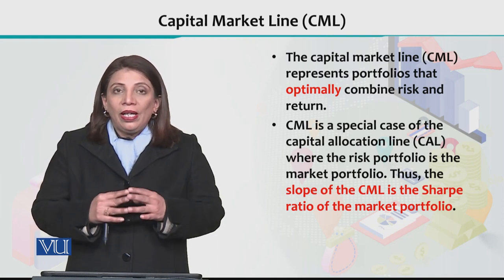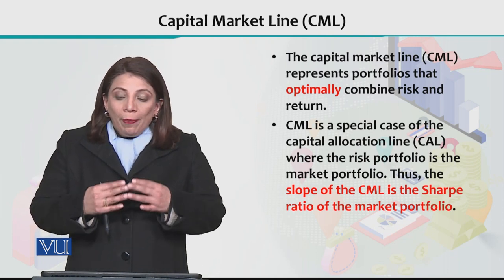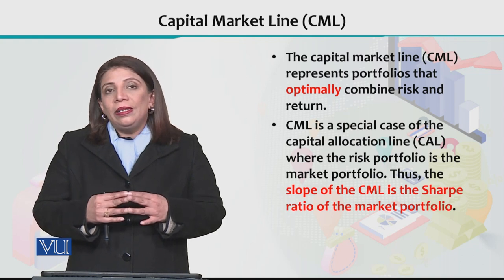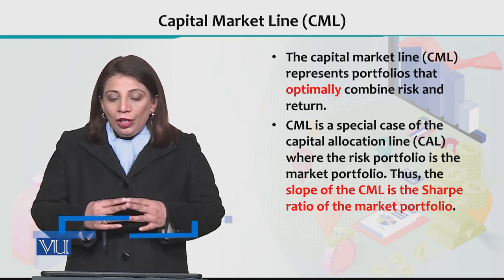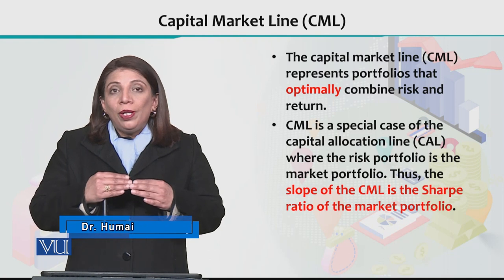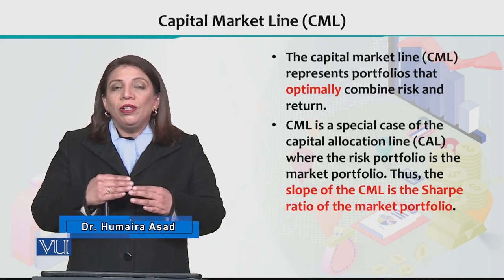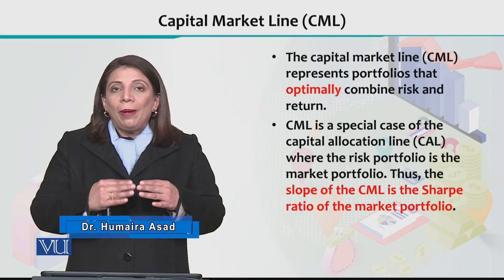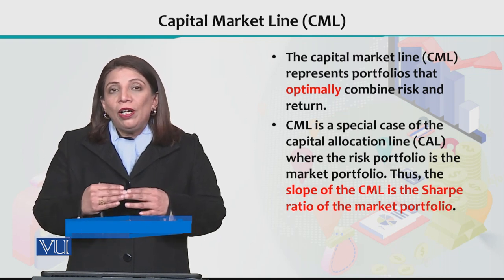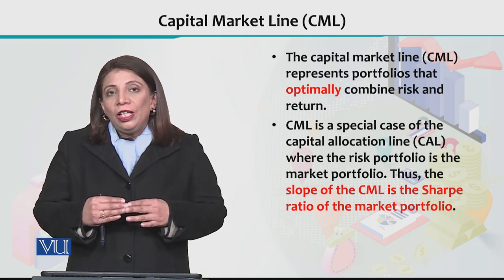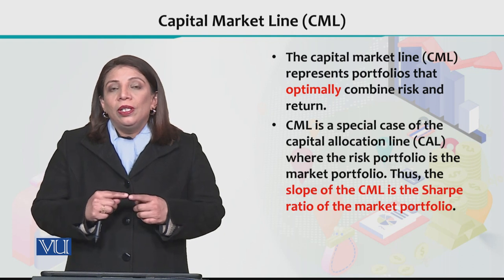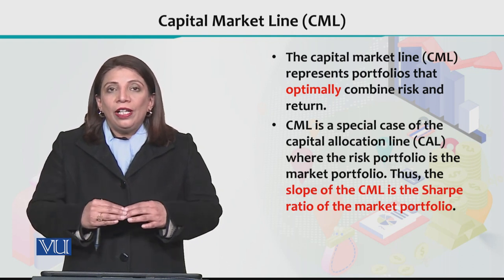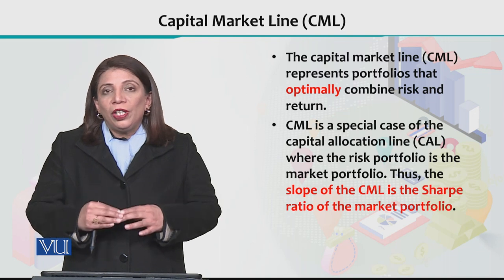The capital market line, which we abbreviate as CML, is the line where you have an optimal combination of risk and return. The capital allocation line defines the optimum risk-return combinations for a particular scenario.